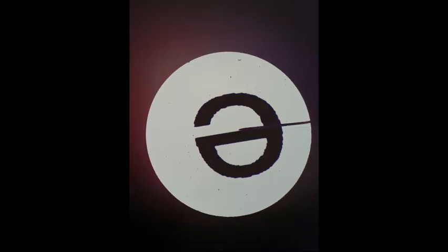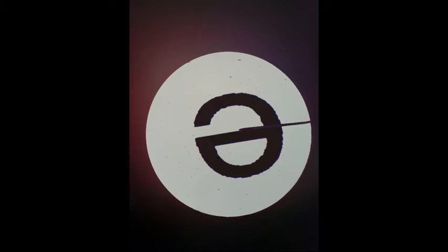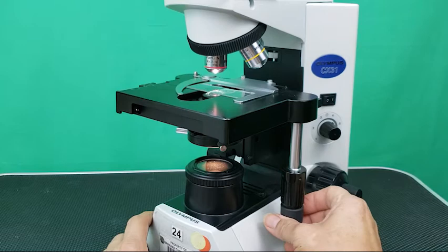Center the letter E over the opening in the stage and turn on the illuminator. Look through the ocular and observe the circle of light that is called a field of view. Make sure the 4x scanning objective is in place over the stage opening. It will click in position.